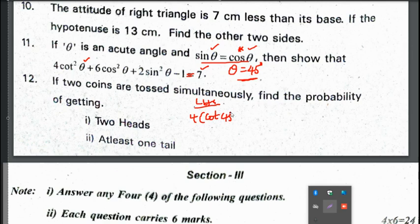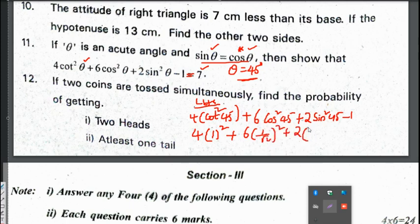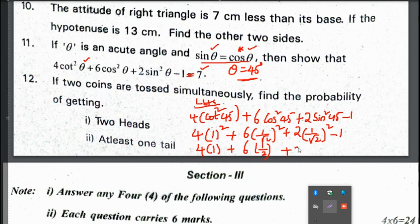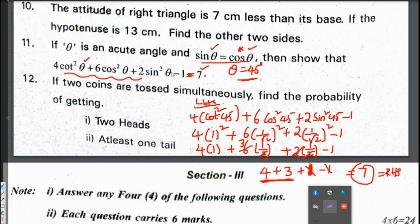As sin θ = cos θ, obviously θ will become 45 degrees. You have to remember this: whenever sin θ and cos θ are equal, then θ will be 45 degrees. Now, we will replace θ = 45 degrees in the left side and prove answer as 7. Taking LHS: 4cot²45 + 6cos²45 + 2sin²45 - 1. Cot 45 is 1, so 1² + 6(1/√2)² + 2(1/√2)² - 1. 4 × 1² = 4. 6 × 1²/2² = 6/2 = 3. 2 × 1²/2² = 2/2 = 1. Minus 1. So plus 1, minus 1 get cancelled. 4 + 3 + 1 = 7, which is RHS. We have taken LHS and proved the answer as RHS, which is 7.